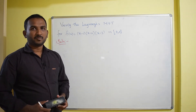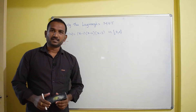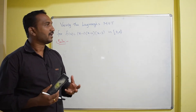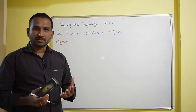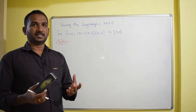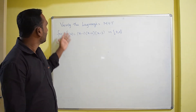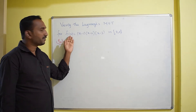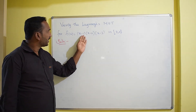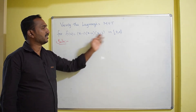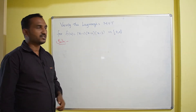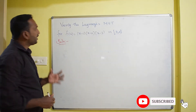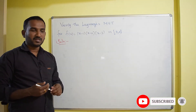Hello everyone, welcome to Mathematics Solution channel. In this video we are going to discuss how to verify the Lagrange's Mean Value Theorem for a particular function. Here the question is: verify the Lagrange's Mean Value Theorem for the function f(x) = (x-1)(x-2)(x-3) in the closed interval [0,4]. First, we need to recall what is the Lagrange's Mean Value Theorem.